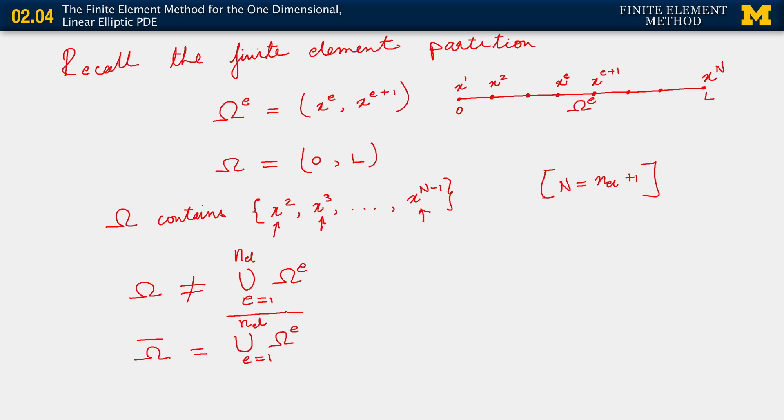Now when I apply closure there, I make sure that I pick up all the nodal points, including x1 and x_n. So in this form, this contains all nodal points x1 all the way up to x_n.